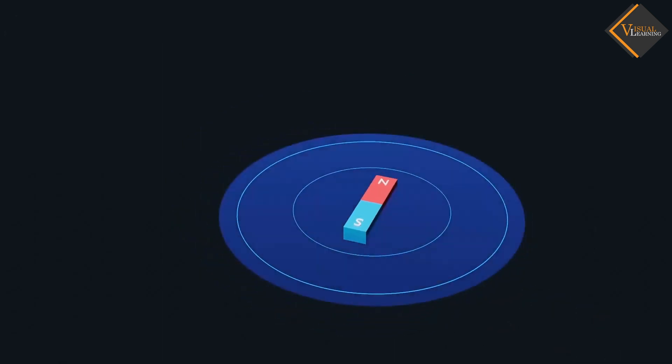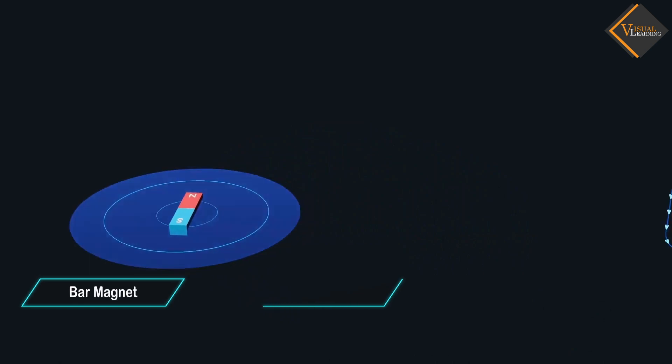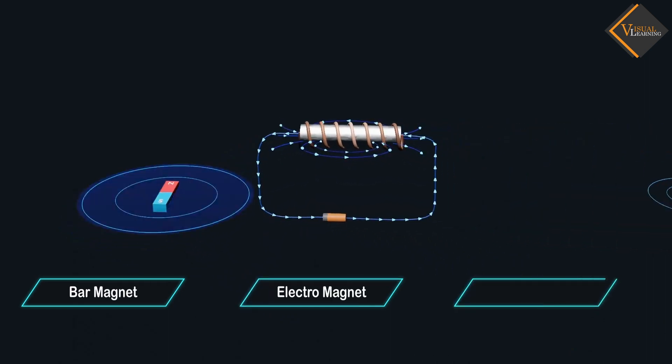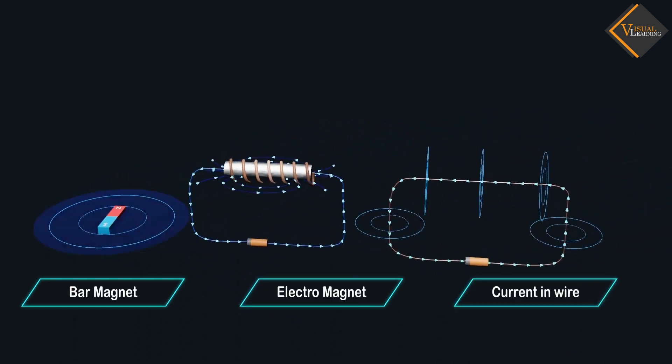Also, magnetic field can be produced by many sources, like bar magnet, electromagnet, or current carrying wire. We will discuss all these sources in further classes in detail.